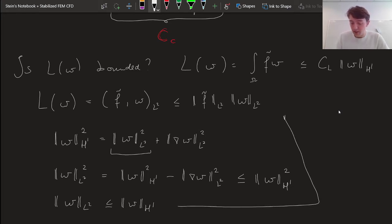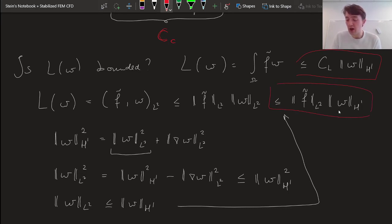And thereby, I can simply say that this is bound from above by the integral of f in L2 sense times the norm of w in H1. And that's what we're looking for, so this is going to be equal, or this is an expression equivalent to that one. So now we obtain an expression specifically for Cl, our boundedness constant, as the L2 norm of our function f tilde. So this is going to be our boundedness constant.